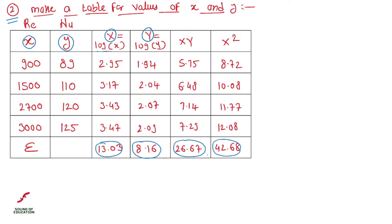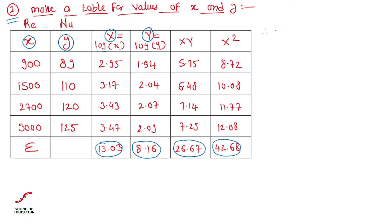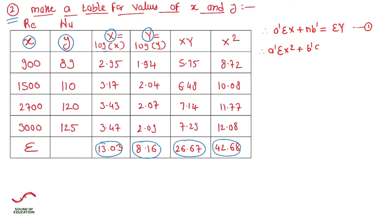I have already calculated these values; you will need to calculate them separately. Preparing the table is important as you get marks for it in examination. Now again using the two normal equations of the straight line: first equation is a' * summation(X) + n * b' = summation(Y), and second equation is a' * summation(X²) + b' * summation(X) = summation(XY).